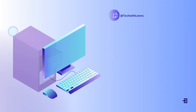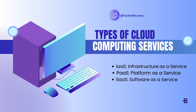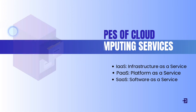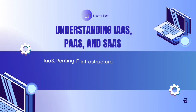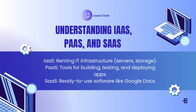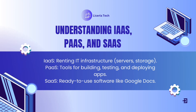There are three main types of cloud computing services: Infrastructure as a Service, or IaaS; Platform as a Service, or PaaS; and Software as a Service, or SaaS. IaaS is where companies rent IT infrastructure such as servers and storage on demand from providers like Amazon Web Services.